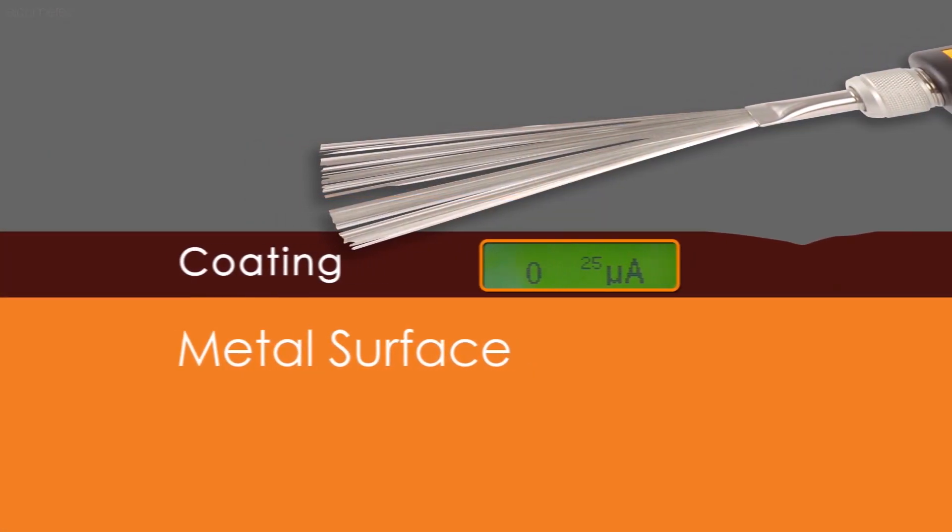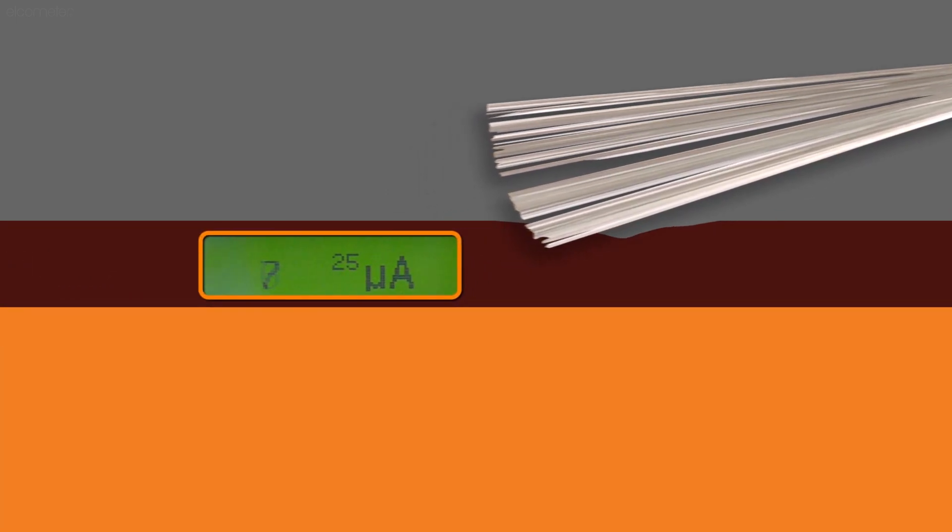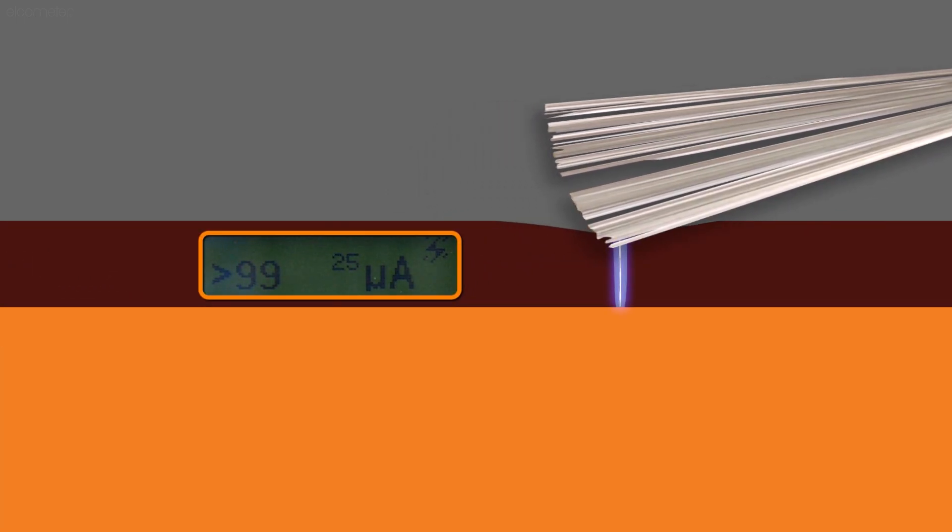But when a flaw is located, a spike in the current is created, which is then detected by the unit as a breakdown in the coating, which in turn triggers the unit's alarm.